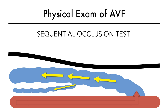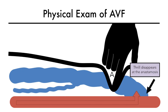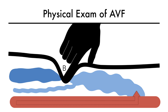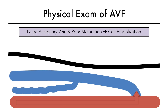The sequential occlusion test is similar to the pulse augmentation test, except here we focus not on hyperpulsatility but rather the disappearance of thrill at the anastomosis. When you completely occlude the fistula close to the anastomosis at point A, the thrill at the anastomosis disappears due to interruption in flow. Now move your finger downstream along the cephalic vein to point B. Occluding the fistula at point B, past the accessory vein, allows blood to flow through the large accessory vein. Due to flow from the radial artery through the anastomosis and into the accessory vein, the thrill will reemerge at the anastomosis. If you suspect a large accessory vein and have a poorly maturing fistula, coil embolization of the accessory vein may help.